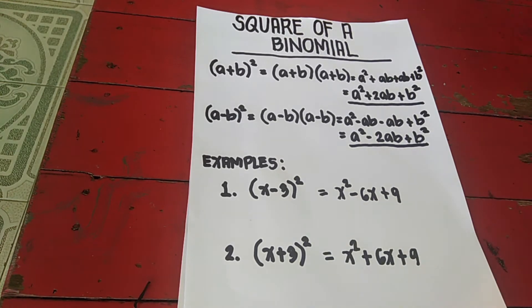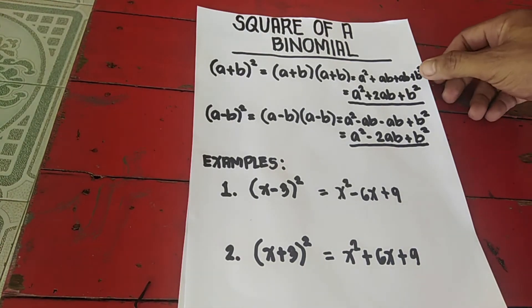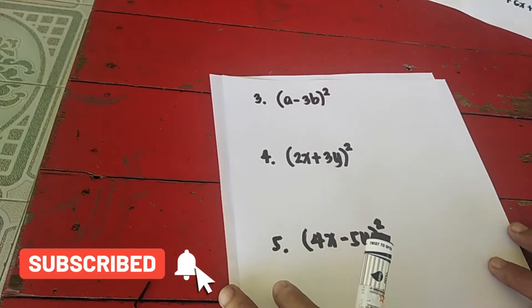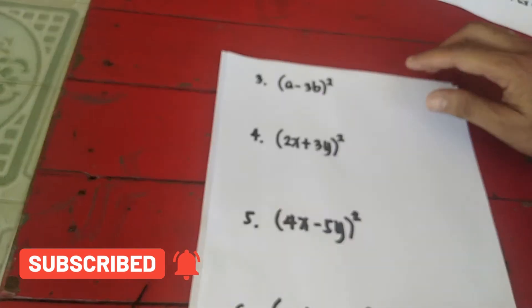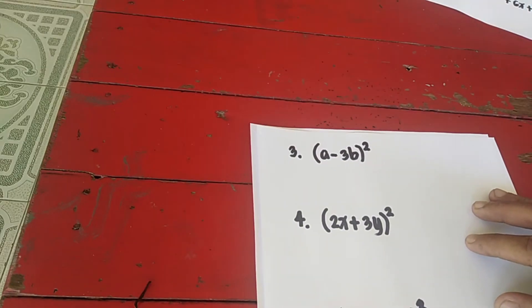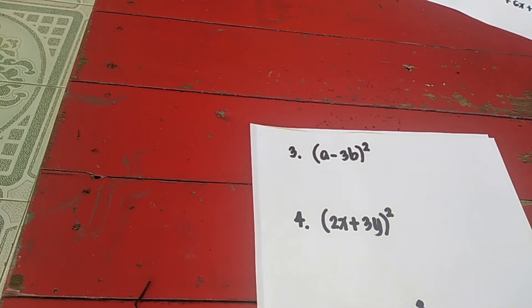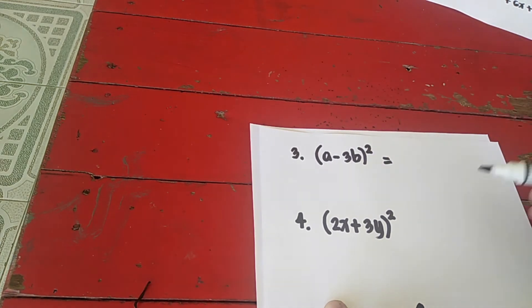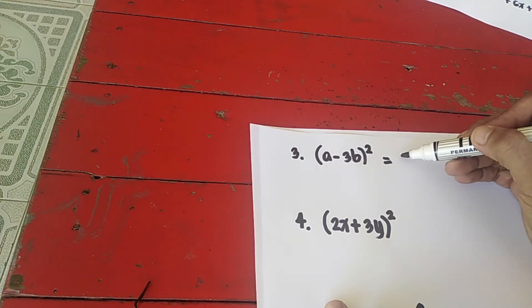The sign of the middle term is always based on the given sign — here it is positive. Now let's proceed to the third example: (a − 3b) squared. Apply the shortcut — square the first term a to get a squared.